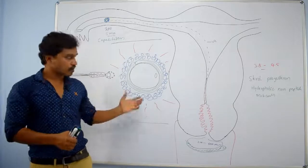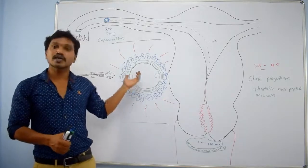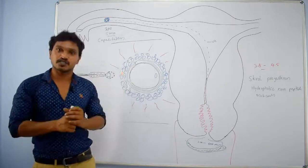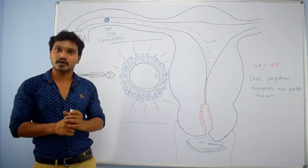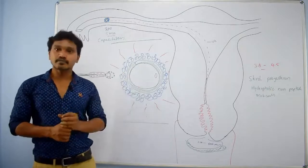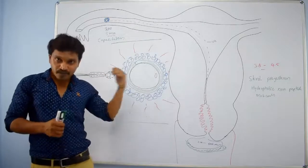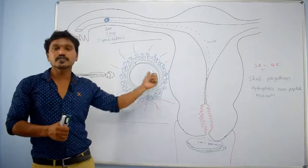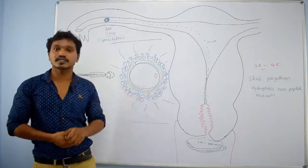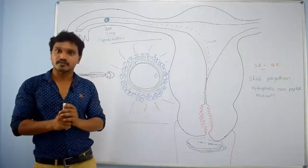For the sperm to reach the cytoplasm of the oocyte, it has to pass through three barriers: the corona radiata, the zona pellucida, and the vitelline membrane — which is the cell membrane of the oocyte. Now approximation of gametes is complete; the actual fertilization — the fusion — will start next. We will take a break and then discuss the second step: fusion of gametes.